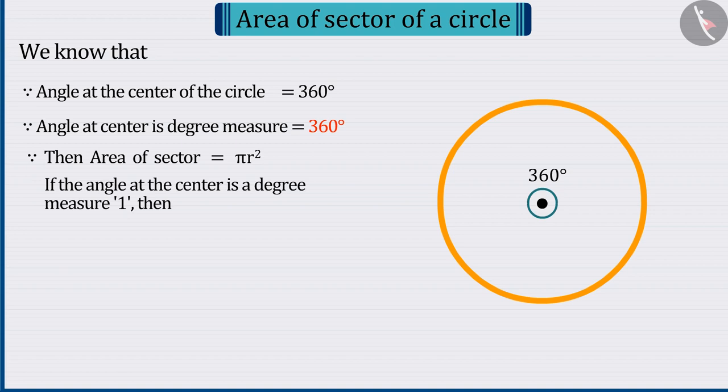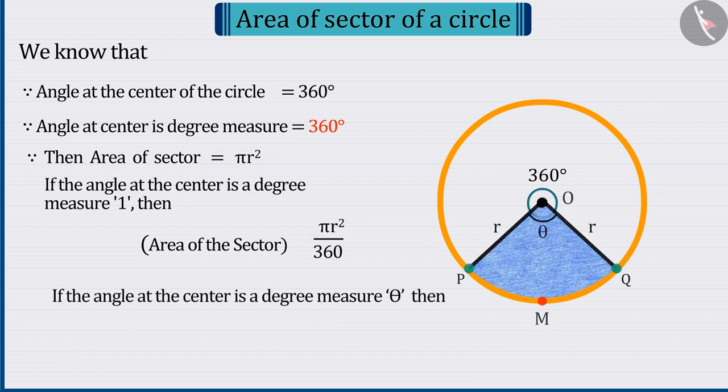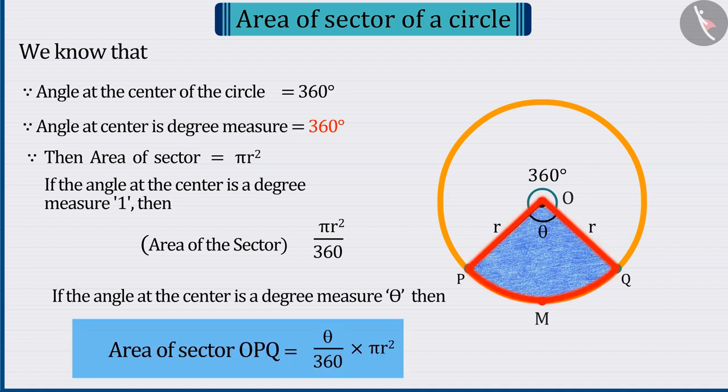Similarly, when the degree measure of the angle at the center is 1, the area of the sector is determined to be pi r square upon 360. So, can you tell, when the angle at the center is theta, what will be the area of the sector? Absolutely correct, the area of the sector OPMQ is theta divided by 360 multiplied by pi r square, with which we can determine the area of any sector.